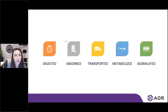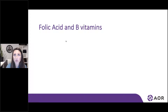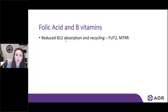Individuals actually require much higher levels of certain nutrients and importantly even different forms. The most well-known example deals with folic acid and B vitamins, specifically the methylation pathway. There's a specific gene called FUT2 — Fucosyltransferase — which reduces the efficiency of B12 absorption, and another gene affects its recycling.